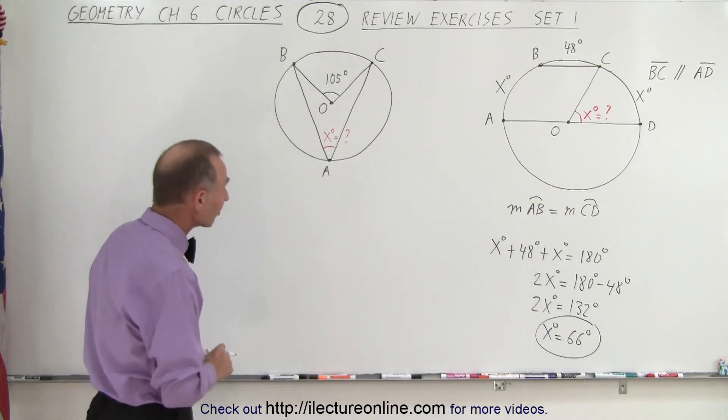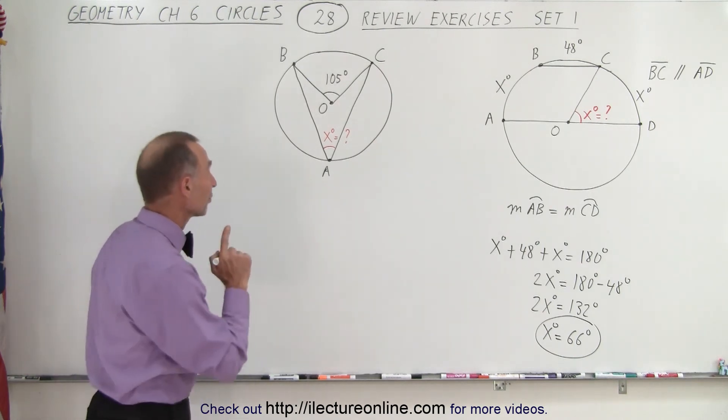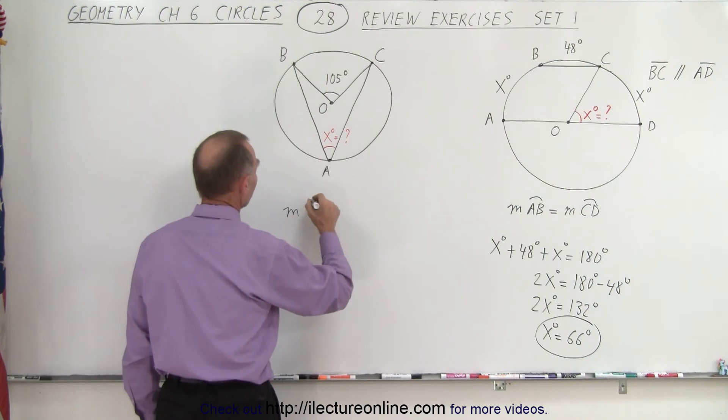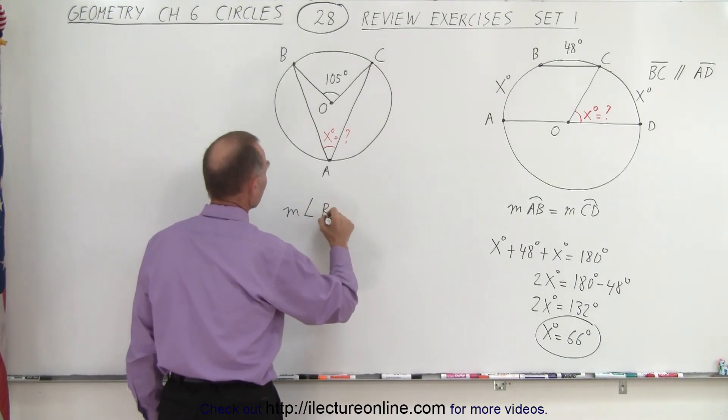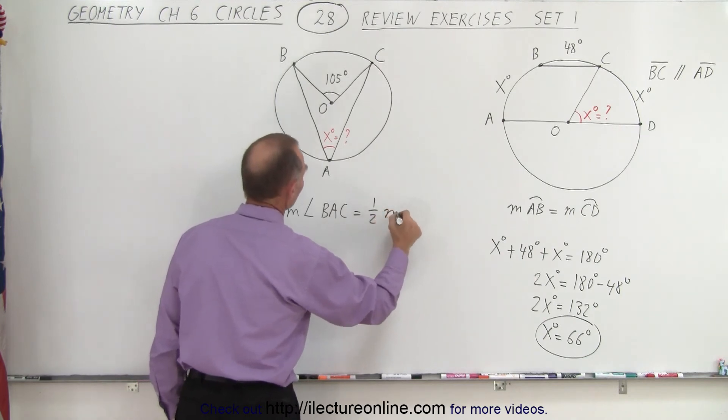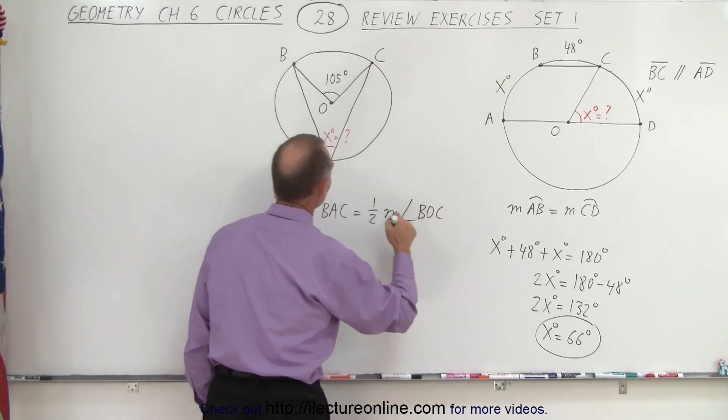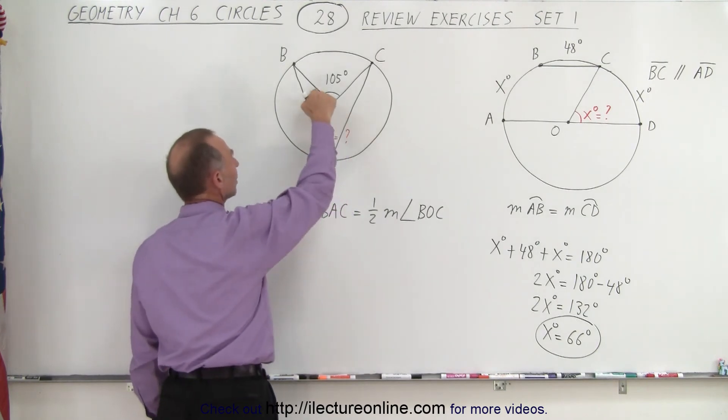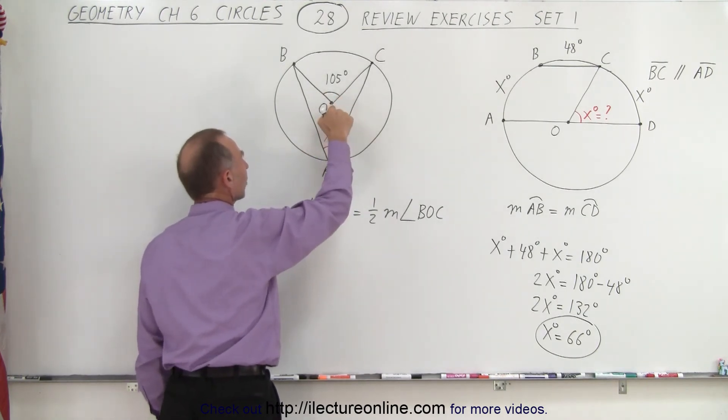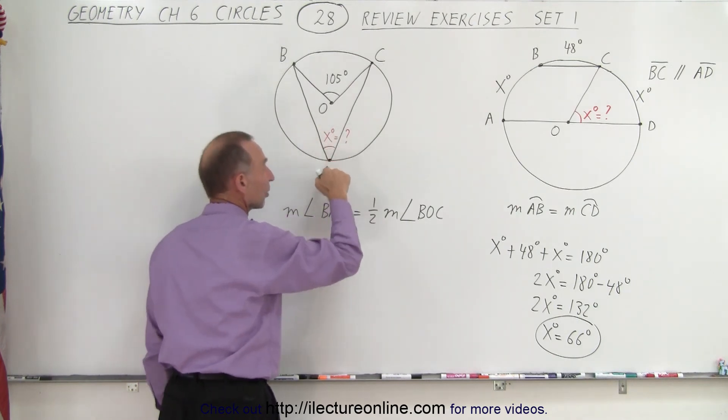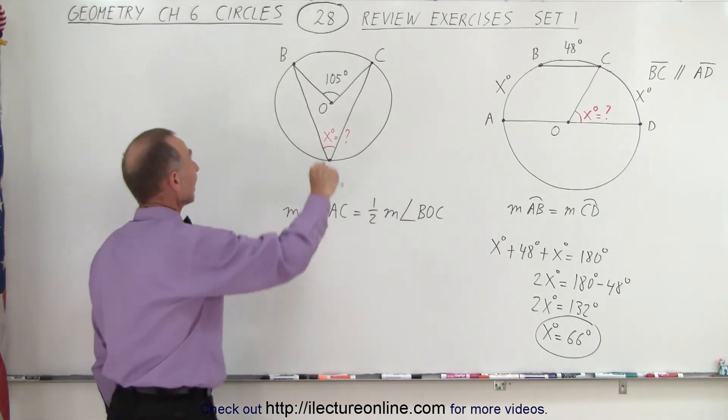Now the second example is actually quite a bit easier because here we know that the measure of angle A, or the measure of angle from B to A to C, must equal one-half the measure of the angle from B to O to C. Since this angle is made from a point starting at the center of the circle and this angle is made from a point starting on the very edge of the circle, and they subtend the same arc length from B to C.